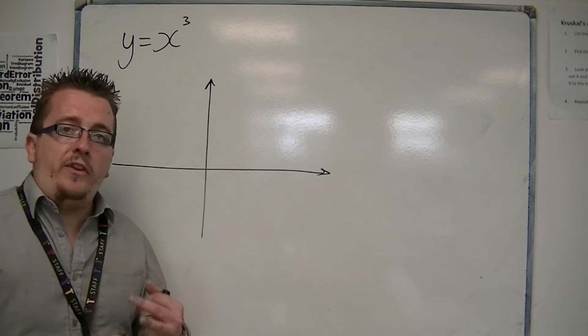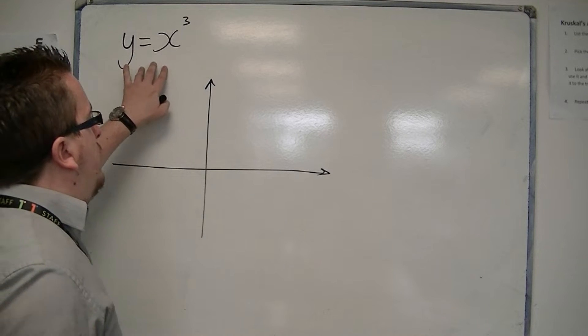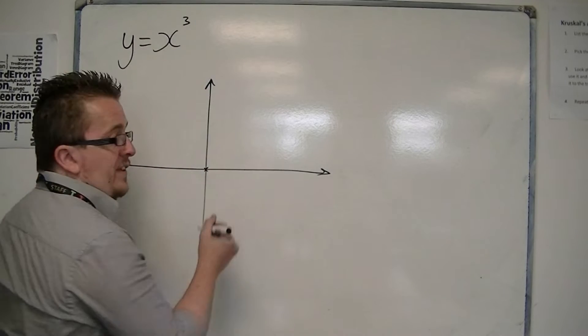So when x is 0, y is also 0, so it will be crossing at the origin.